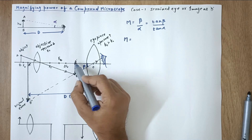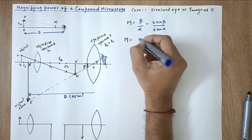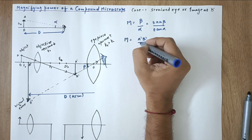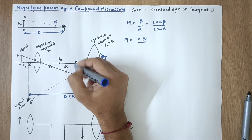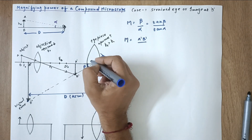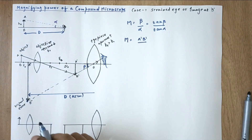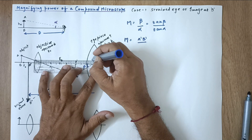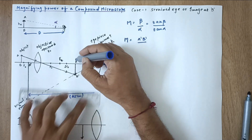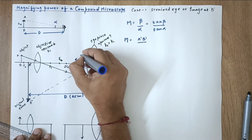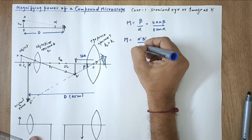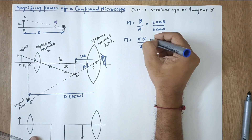Continuing with tan beta: considering the relevant triangle, tan beta equals A'B' divided by the object distance for the eyepiece, which is ue. So tan beta = A'B' / ue.